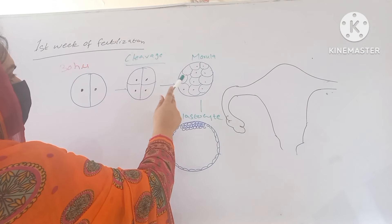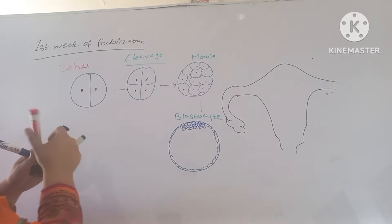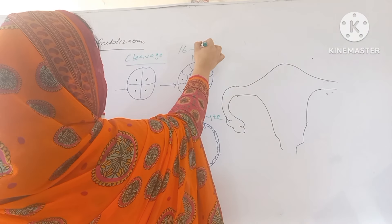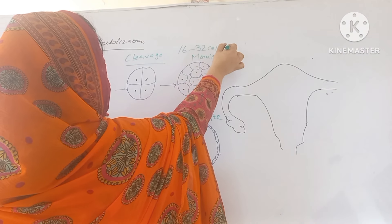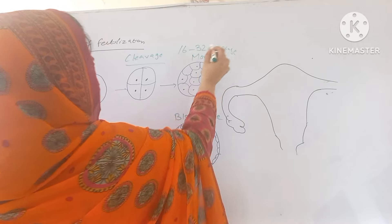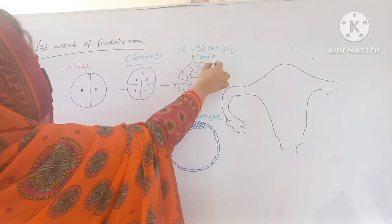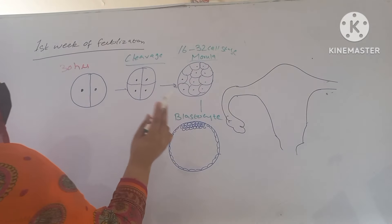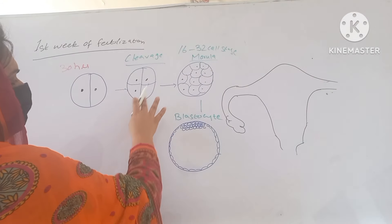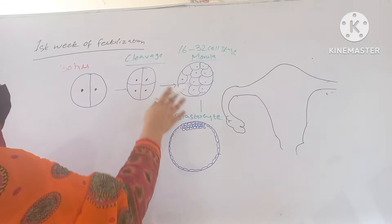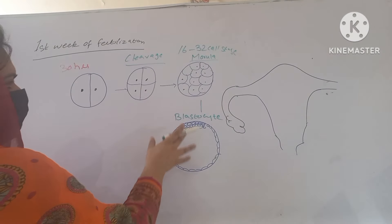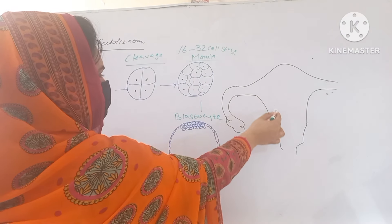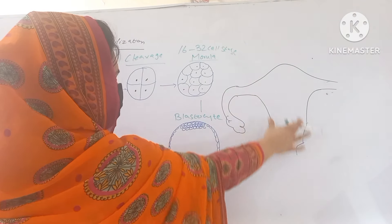When these blastomeres come to the stage of 16-32 cell stage, at that time we call it as the morula. After the morula, these blastomeres will rearrange themselves as the morula will enter into the uterine cavity.